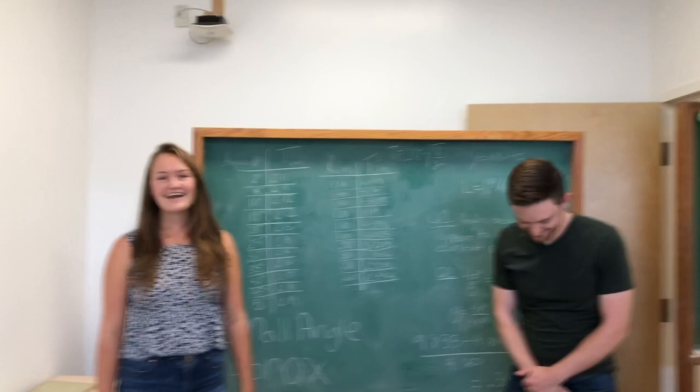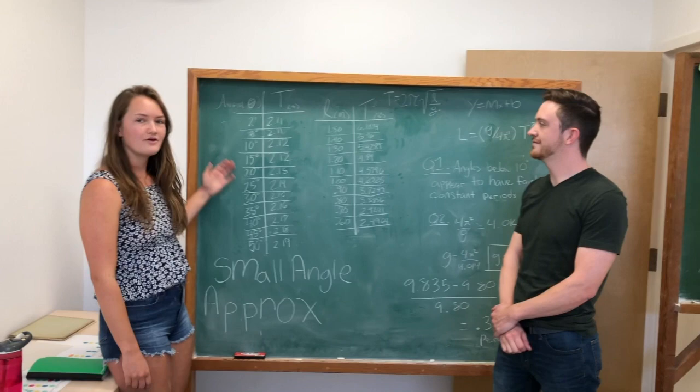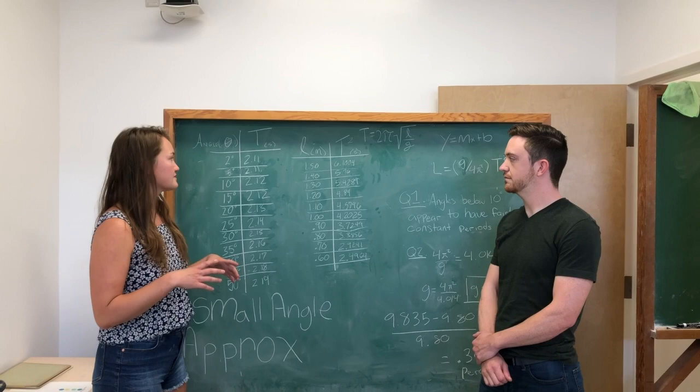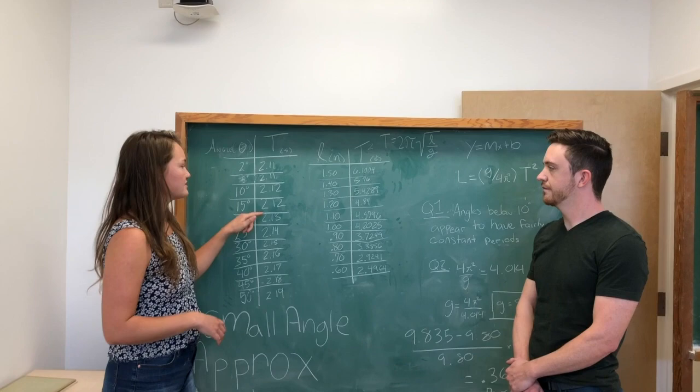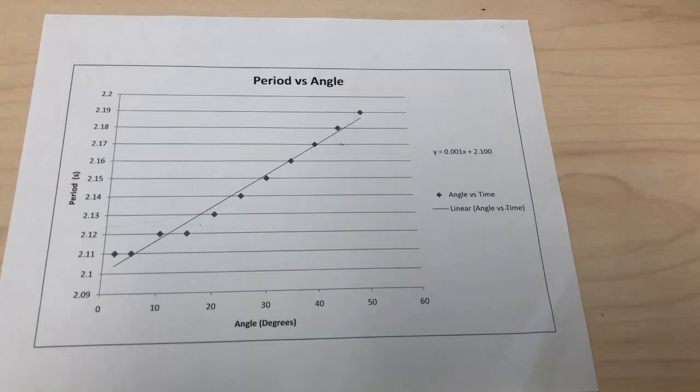Hi guys, welcome back from that demonstration. In this experiment we tried to prove the small angle approximation with our data which says that angles below 10 degrees will have the same period, and in this data you can see that angles below 15 degrees actually had very similar periods, so we proved that.